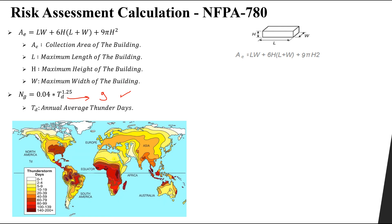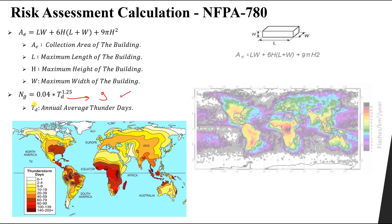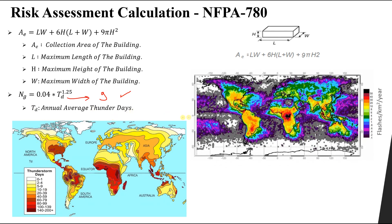You can also get Ng using a map that gives flashes per kilometer square per year directly. This map can be found in online software like Shorted — a very common map you will see often. We usually choose the highest value, which is 9, and substitute to get the required Ng for our location.